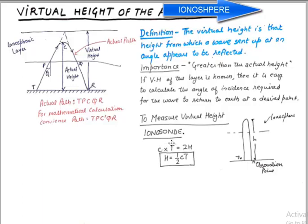We simply use the formula: speed times time equals distance. The distance covered is twice h, as you can see. So height comes out to be half of c times T.